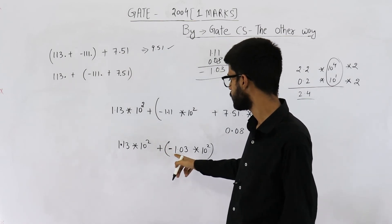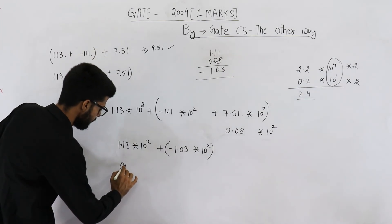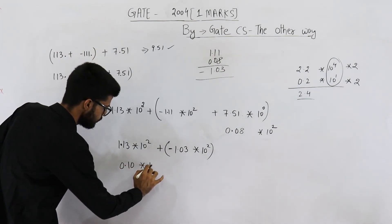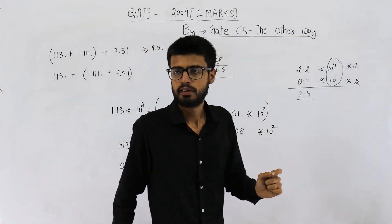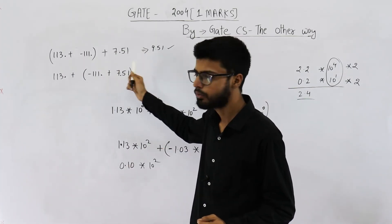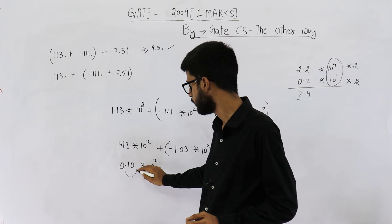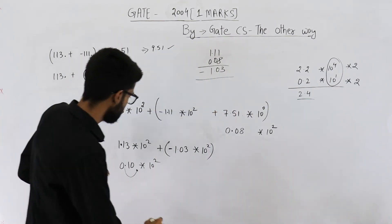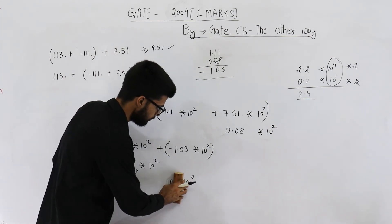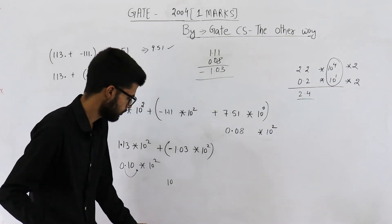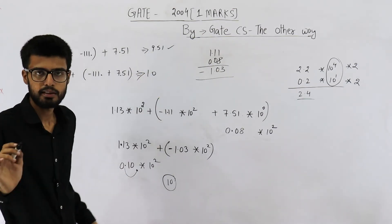So, 113 - 103, that is 10. That means, 0.10 × 10². This is your result. Now, all the numbers in question were having this 10⁰. If you want to convert it into that form, 10⁰, just shift this radix point here. So, you will get 10 × 10⁰. So, this can be ignored because × 10⁰ is always there. So, answer to second question is 10. So, 9.51 and 10. These are the answers.